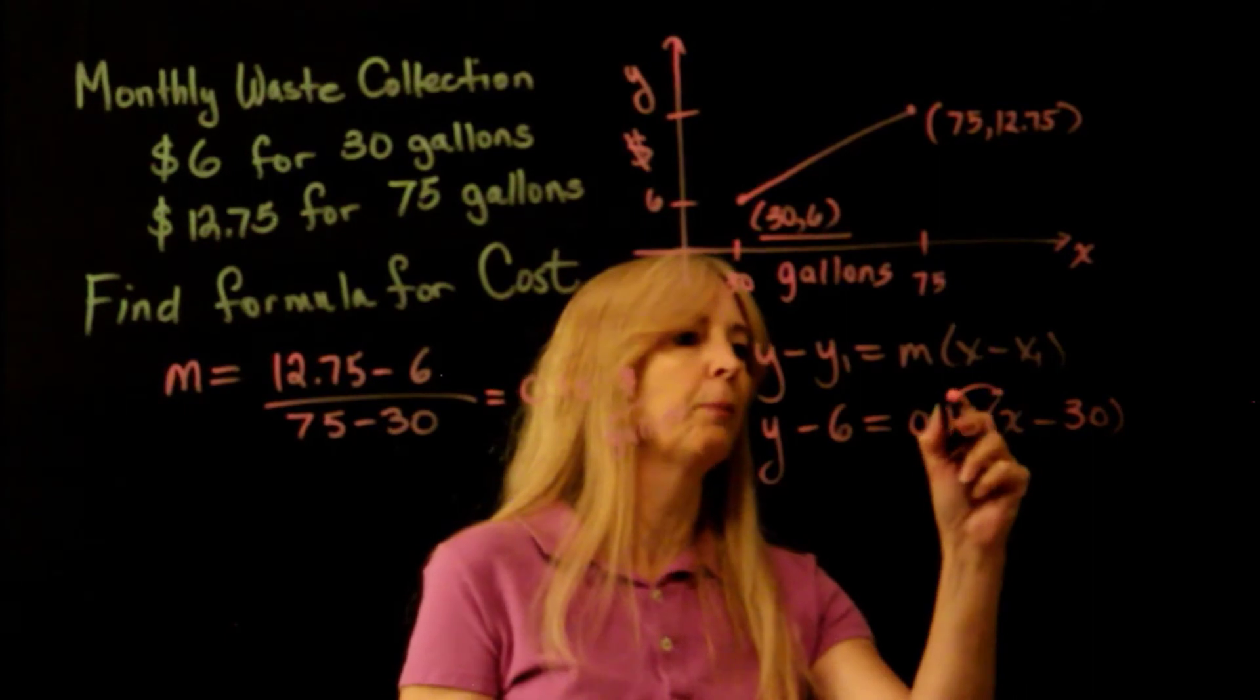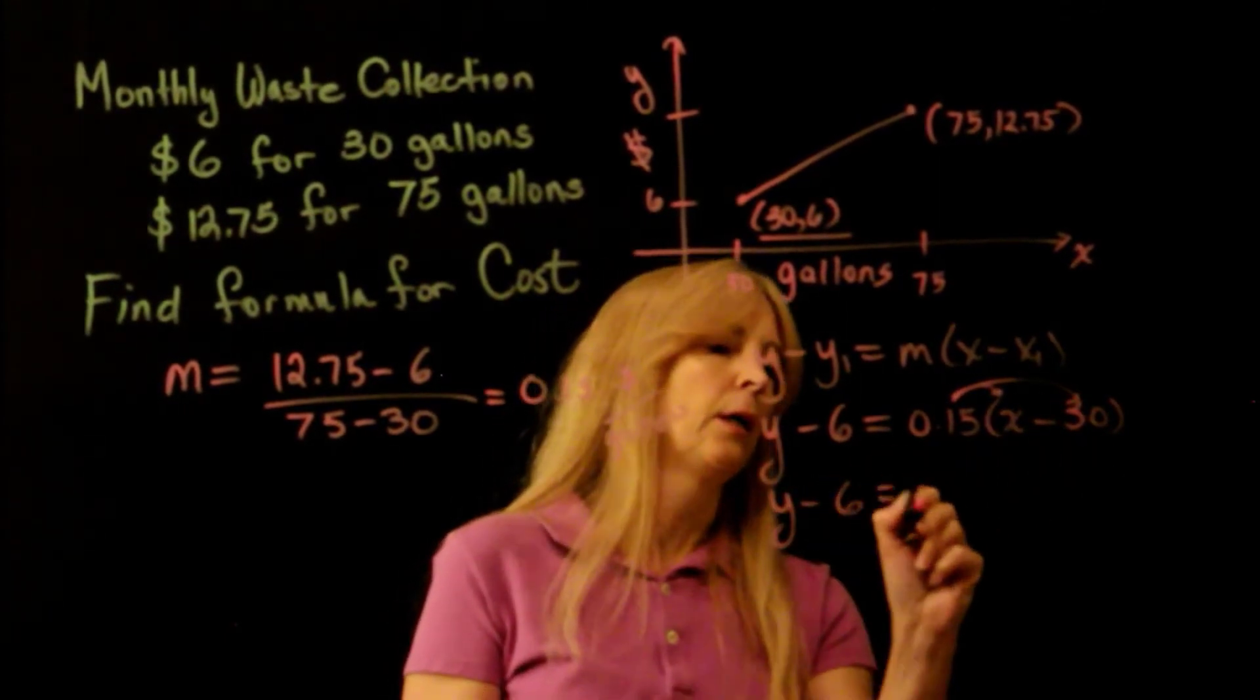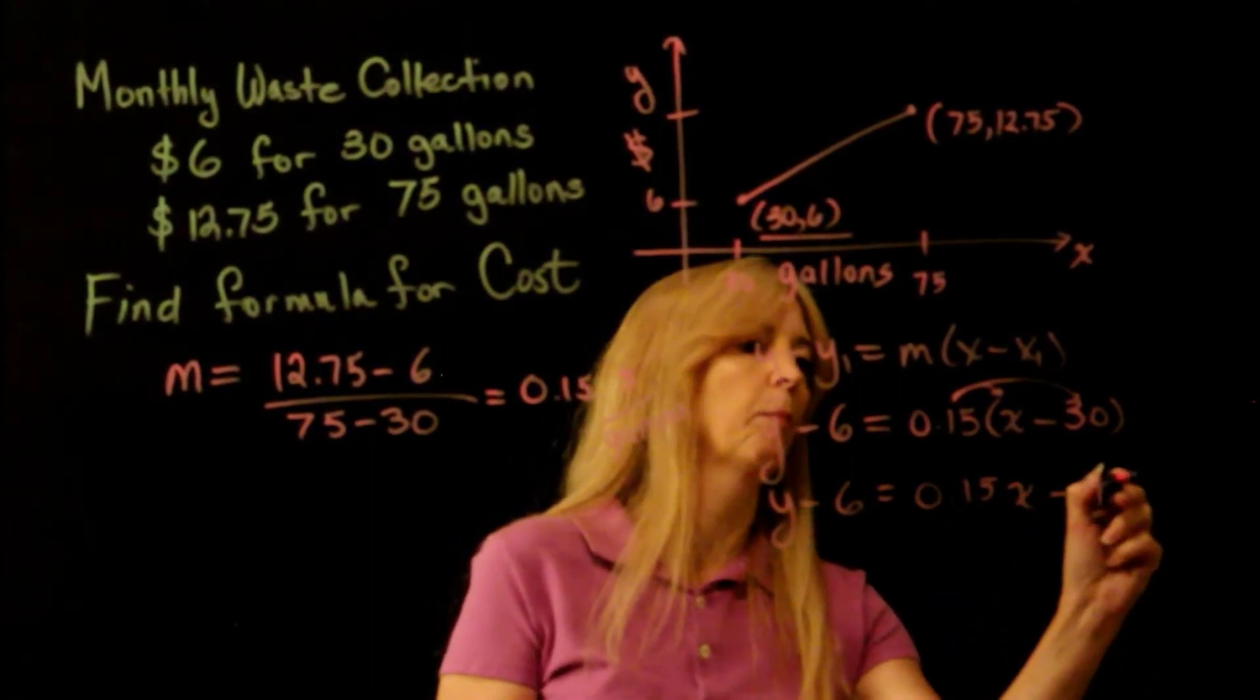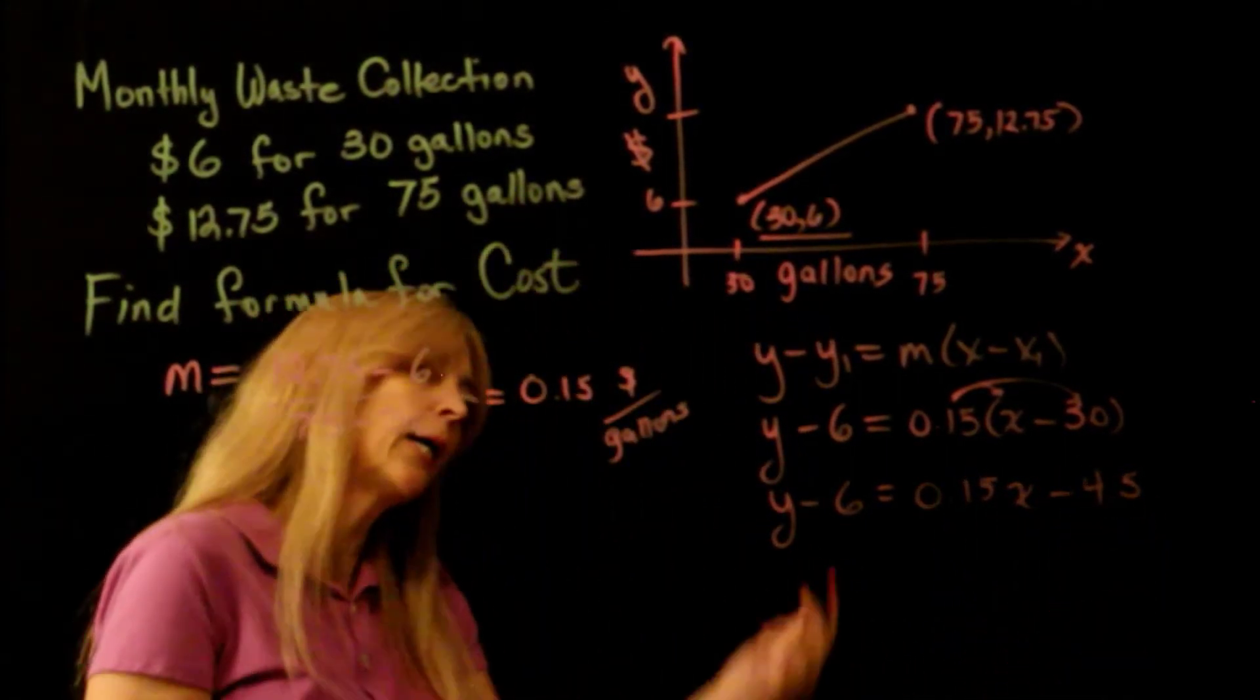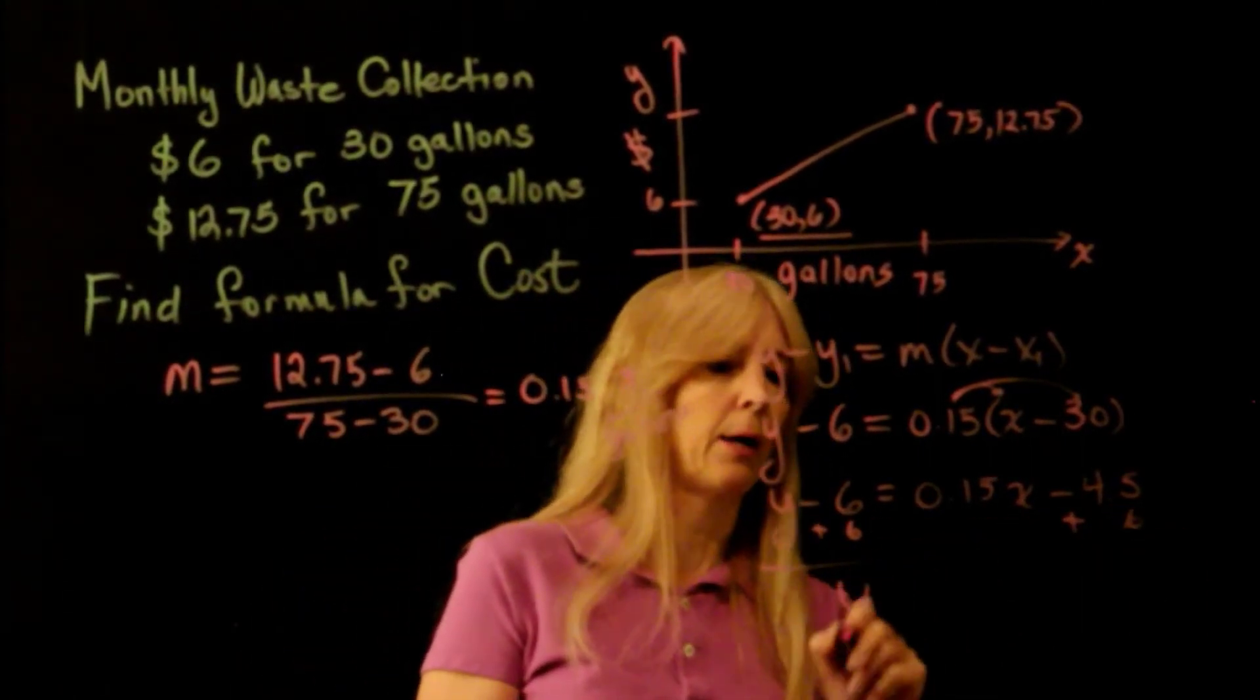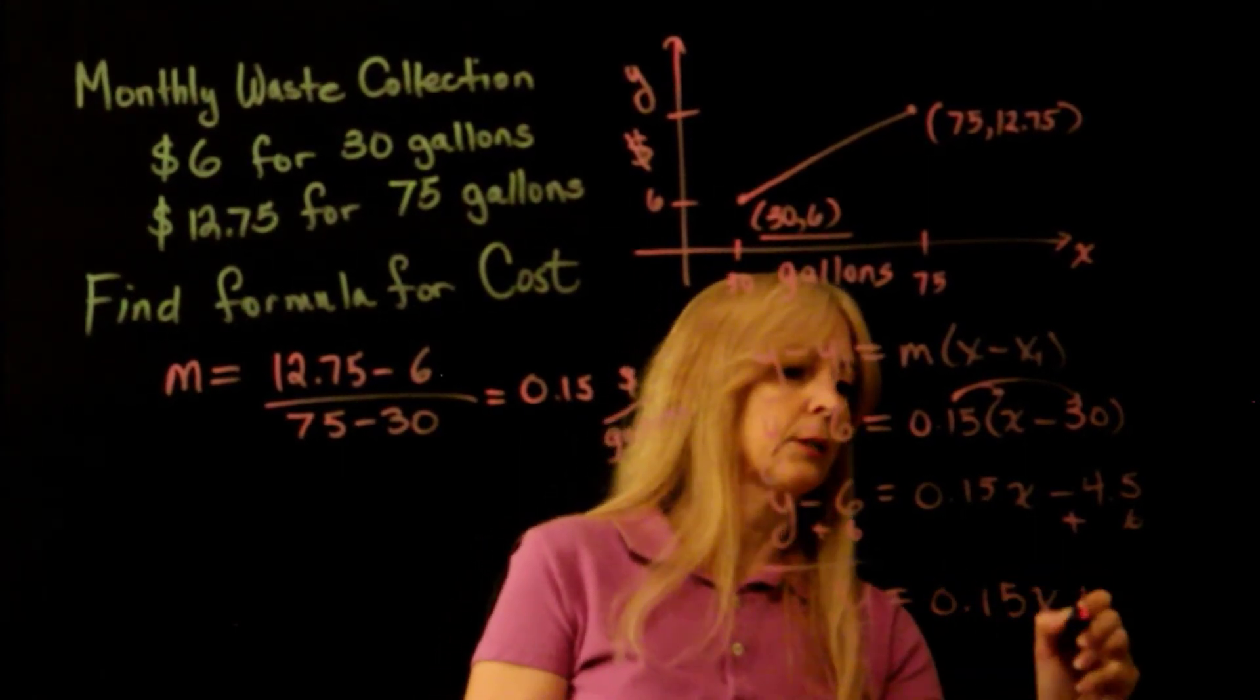All right, and from here I could distribute the 0.15, so I have y minus 6 equals 0.15x minus 4.5. And then finally I can add 6 to both sides, and I get my y equals 0.15x plus 1.5.